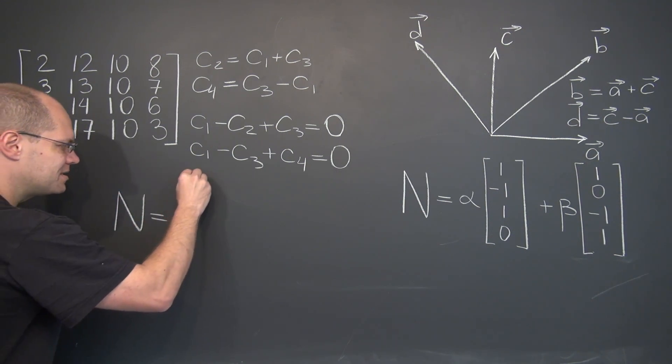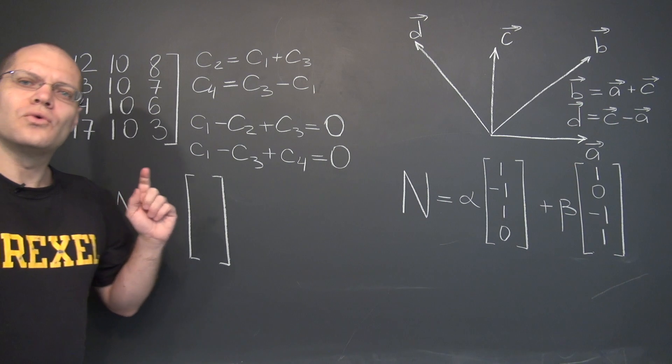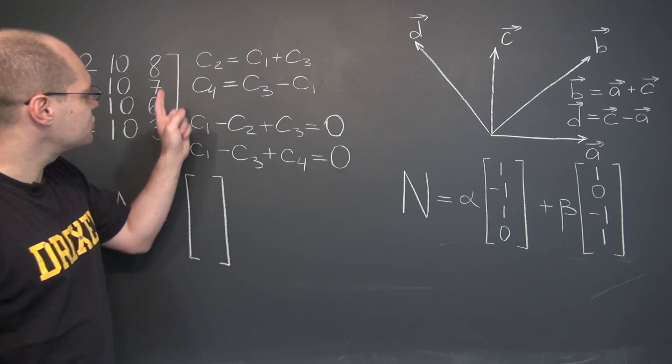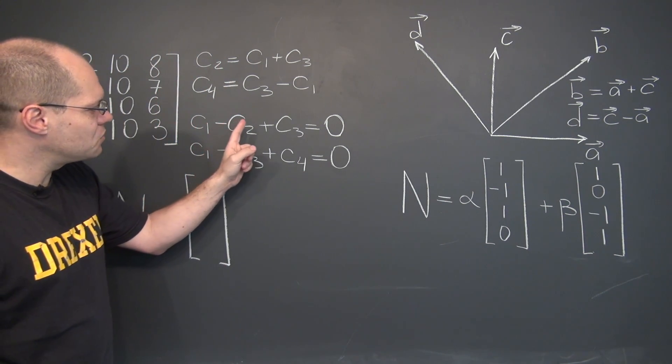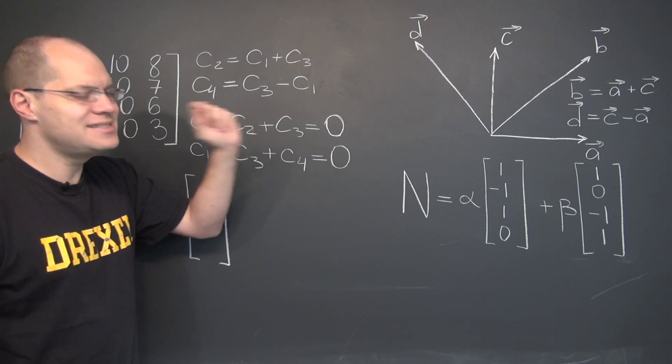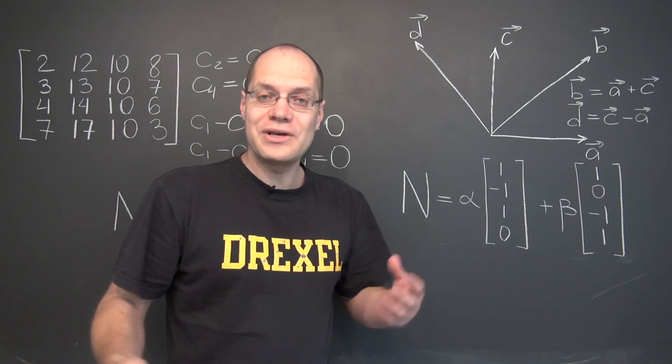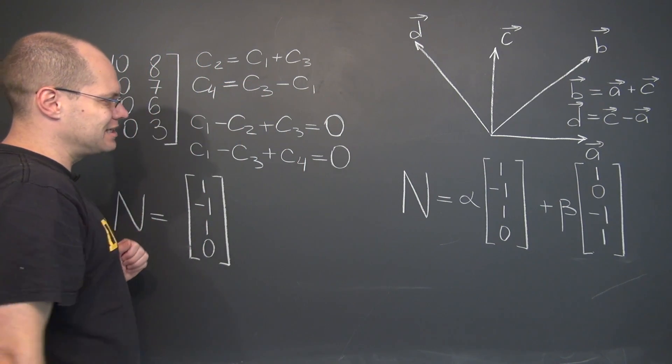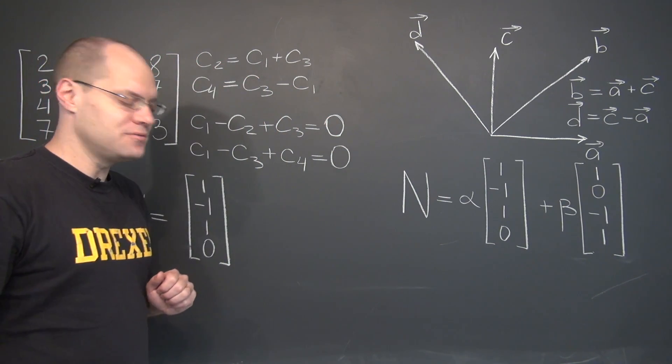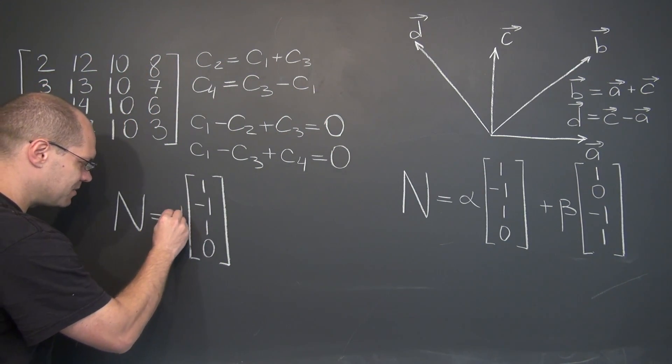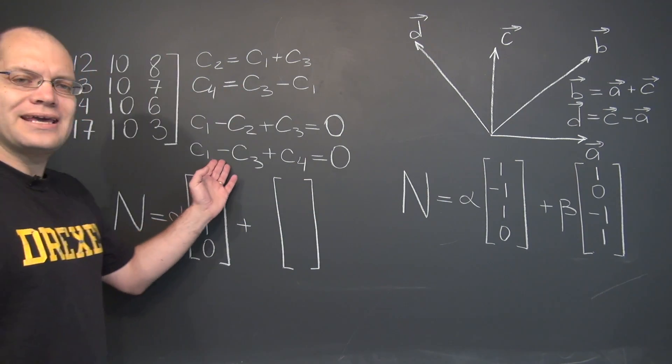The first element in the null space will be, by looking at the coefficients, 1, minus 1, 1, and 0 for C4. And as before, we can take any amount of this linear combination and we'll still have 0. So that's why this gets multiplied by alpha.